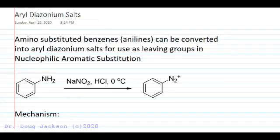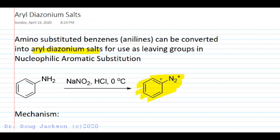Let's look at the formation of aryl diazonium salts and some of their uses in synthesis. Amino-substituted benzenes, or anilines, can be converted into aryl diazonium salts — that N2+ group. That N2 makes a good leaving group, nitrogen gas, in nucleophilic aromatic substitutions. Our reagents here are sodium nitrite, HCl, and zero degrees Celsius, because these salts are unstable at room temperature and higher, so we want to keep them chilled.